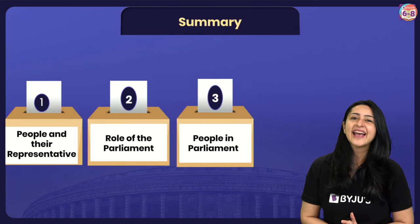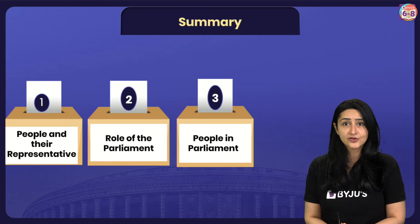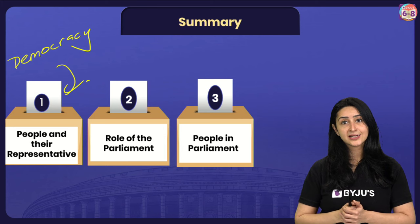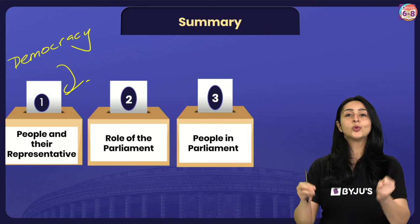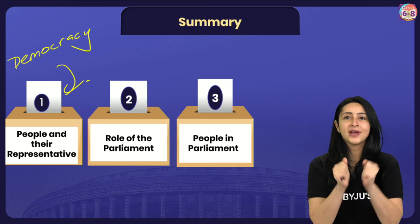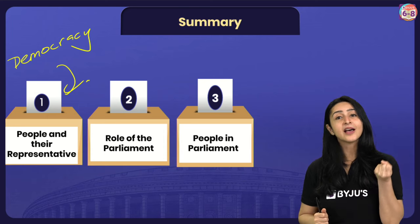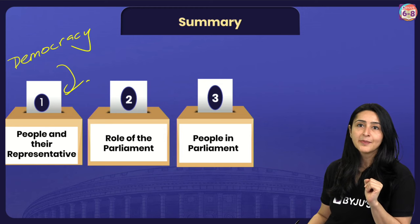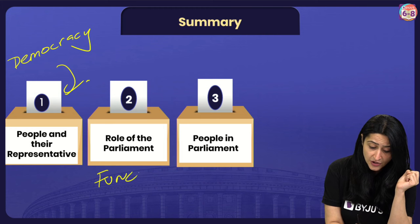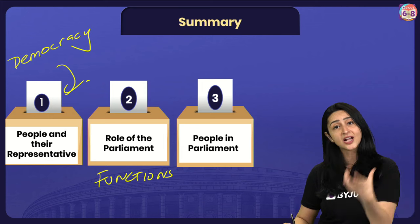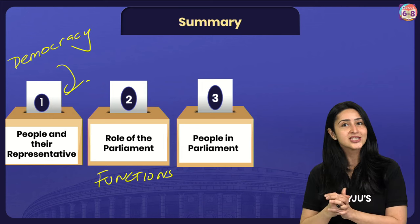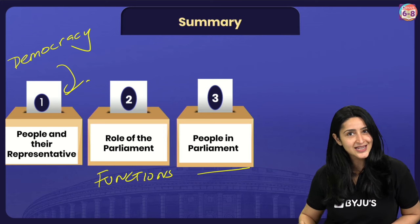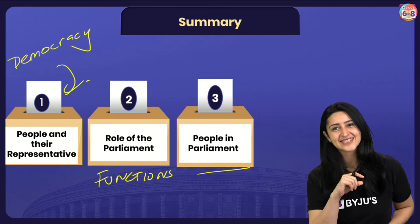We have come to the end of today's session. Let's quickly do a recap. We learned what a democracy is and how important it is for people in a democracy to rule through elected representatives, with decisions taken on behalf of us. We learned about the functions of the Parliament, the Lok Sabha, the Rajya Sabha and their independent functions. We also learned about the people in the Parliament, including reservations for scheduled castes and scheduled tribes. If you have any doubts, please let me know in the comments section below.